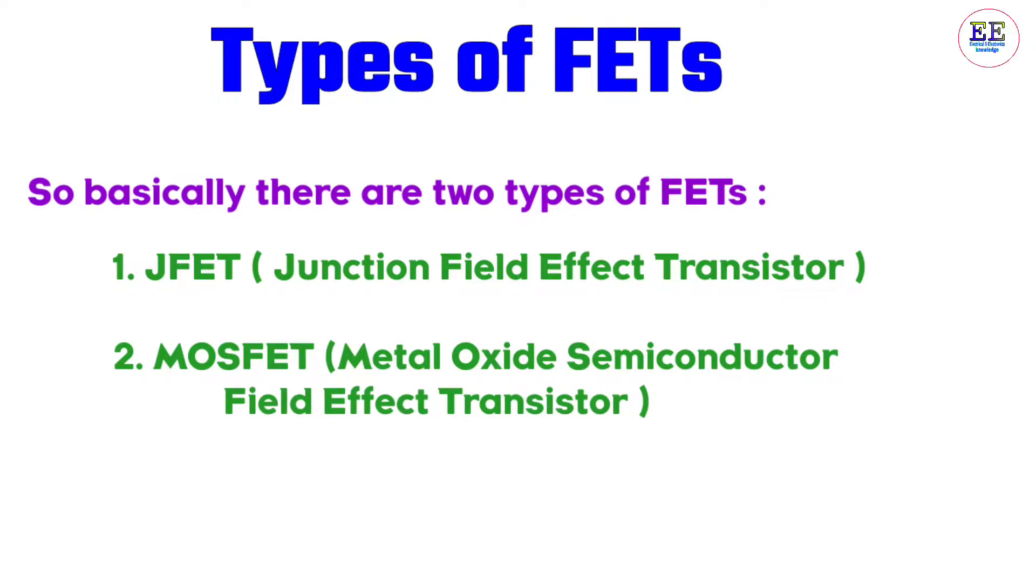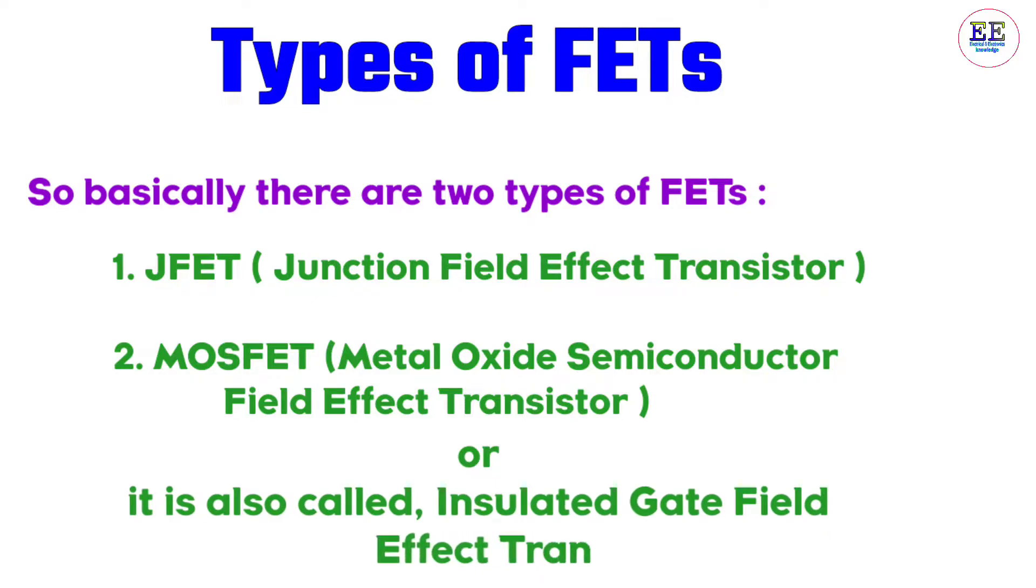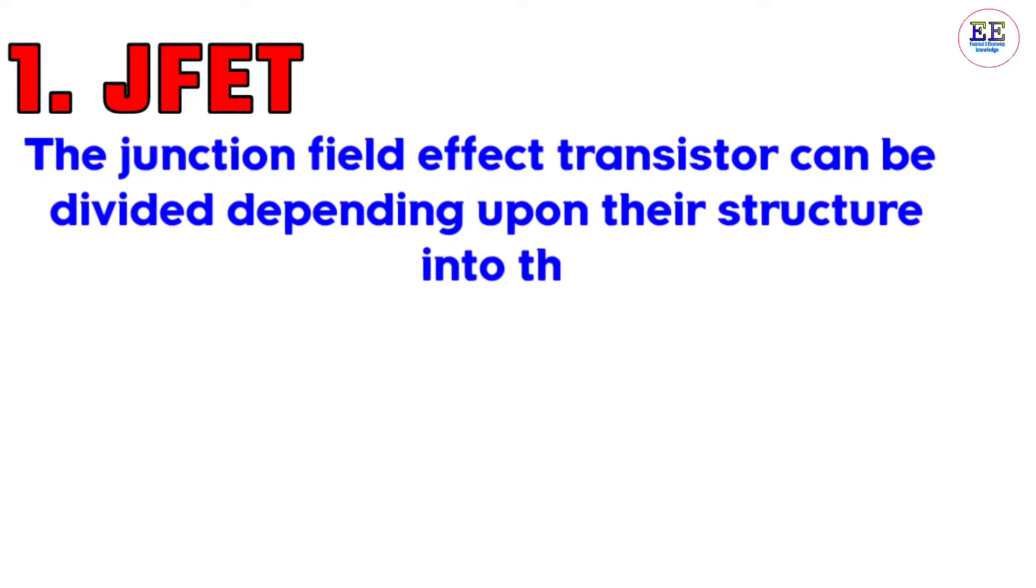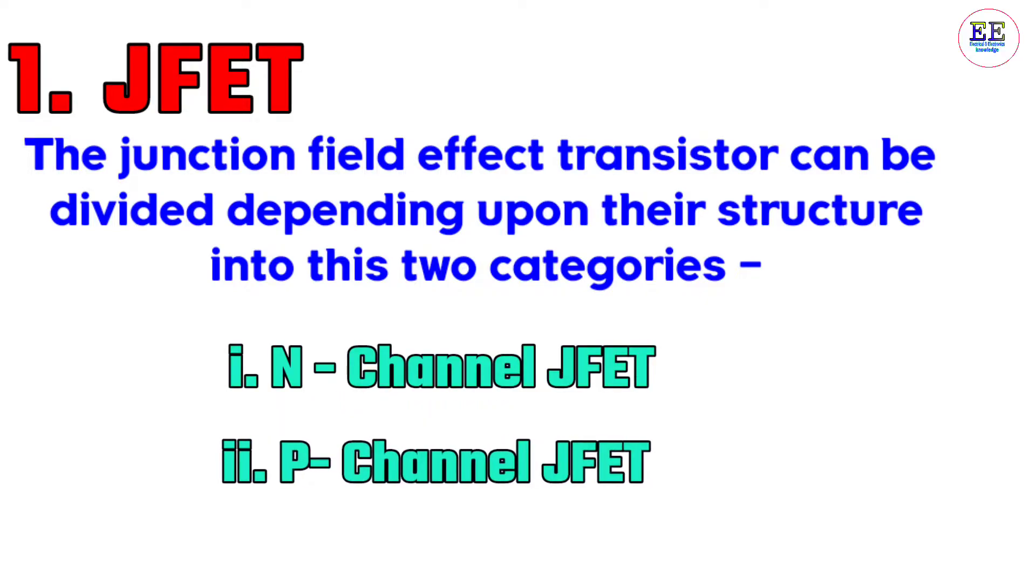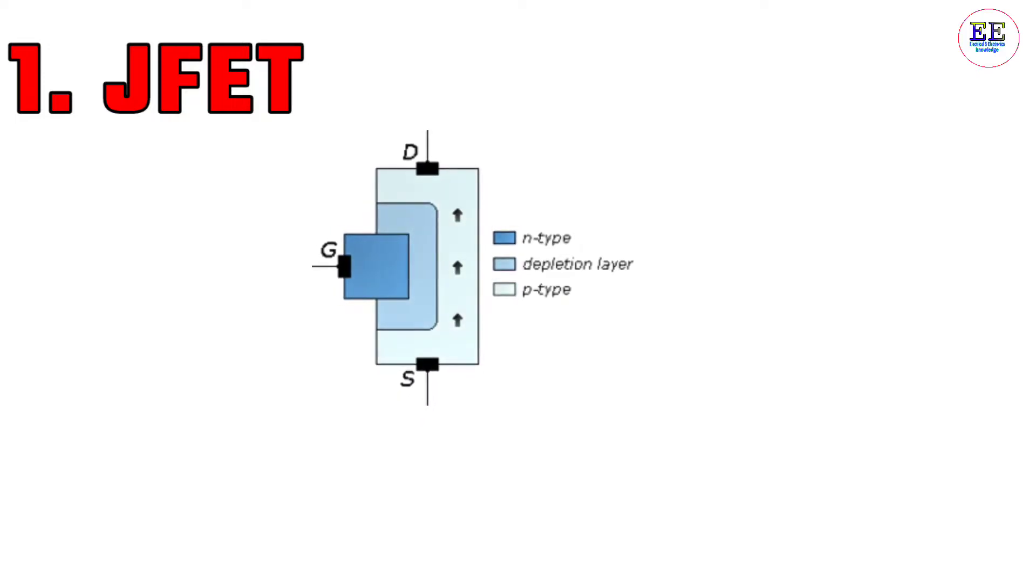The junction field effect transistor can be divided depending upon their structure into two categories: number one, N-channel JFET, and number two, P-channel JFET.